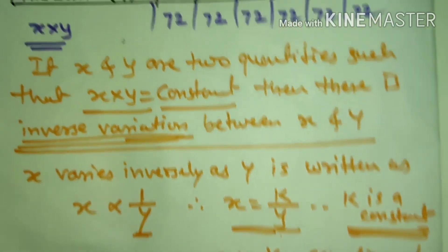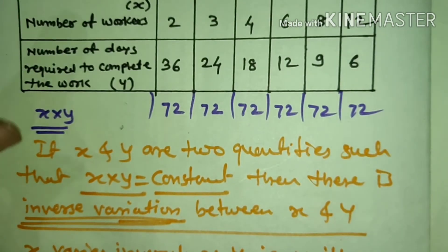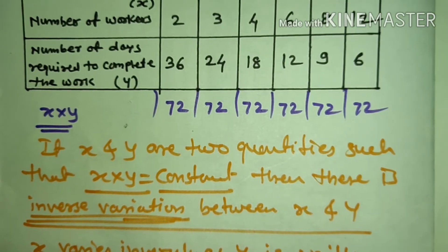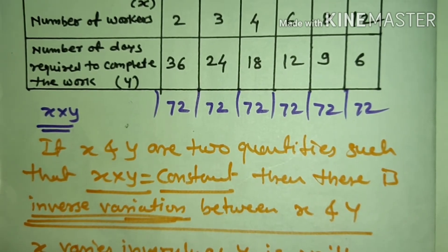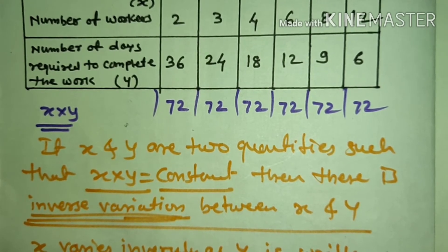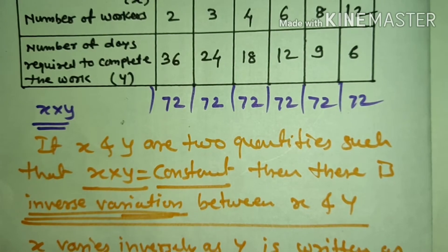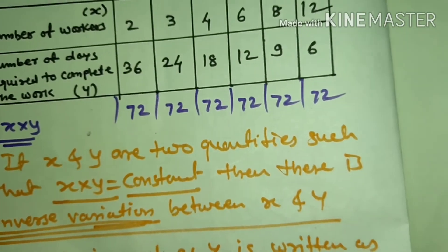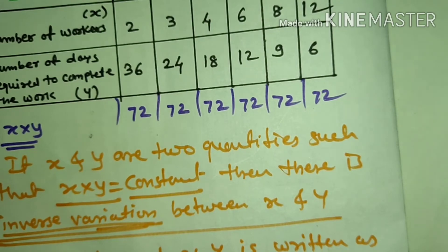So to summarize: inverse variation — whenever x and y are two quantities such that x into y is constant, then we say there is inverse variation between x and y. We write it as x varies as 1 upon y, or x varies inversely as y. The equation is x is equal to k upon y.